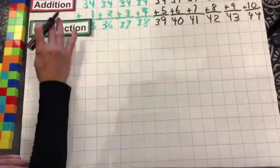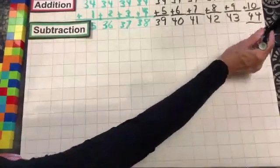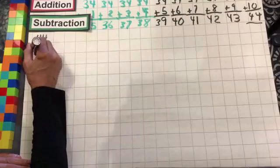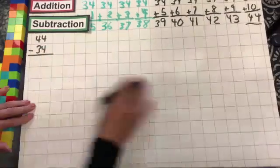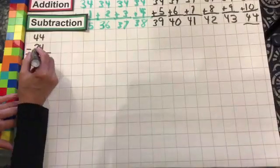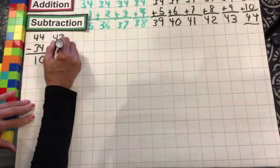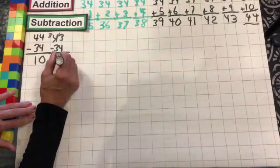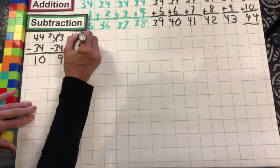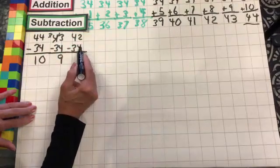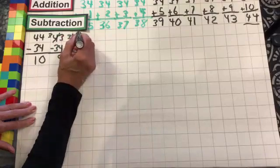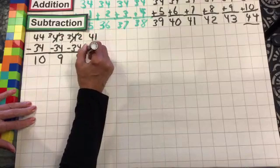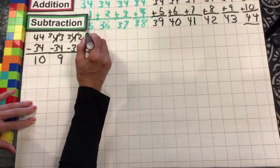I'm going to move that up so we have plenty of space here to work. We're starting with the number 44. We always go with the last one. So we're going to have 44 minus 34: 4 minus 4 is 0, 4 minus 3 is 1. 43 minus 34: 3 minus 4 cannot do — borrow from the 4, leaving 3, making that 13 minus 4 is 9; 3 minus 3, nothing. 42 minus 34: 2, 4 from 2 cannot do — borrow from the 4, leaving 3, making that 12 minus 4 is 8; 3 minus 3, nothing. 41 minus 34: 4 from 1 cannot do — borrow from the 4, leaving 3, making that 11 minus 4 is 7; 3 minus 3, nothing.